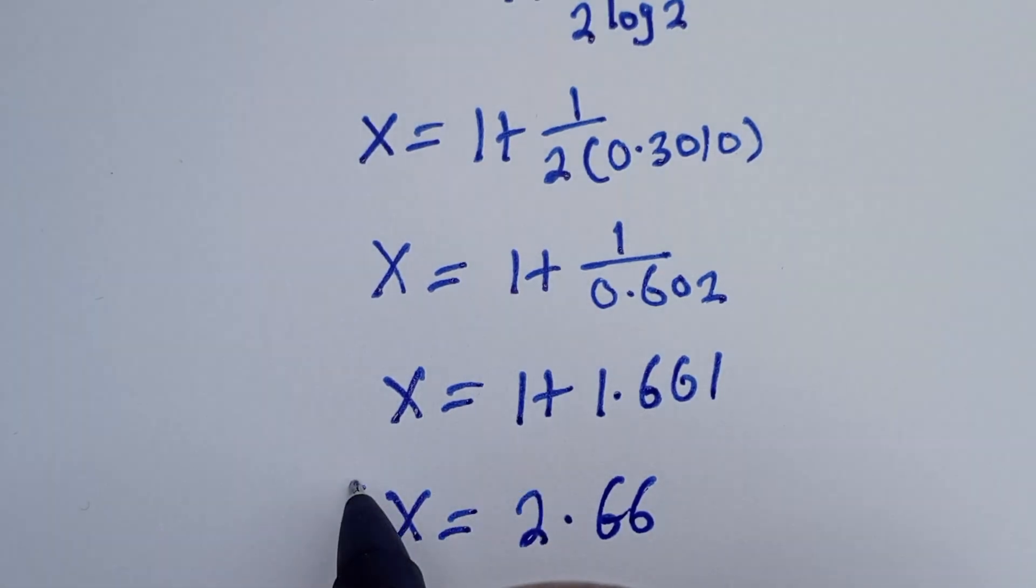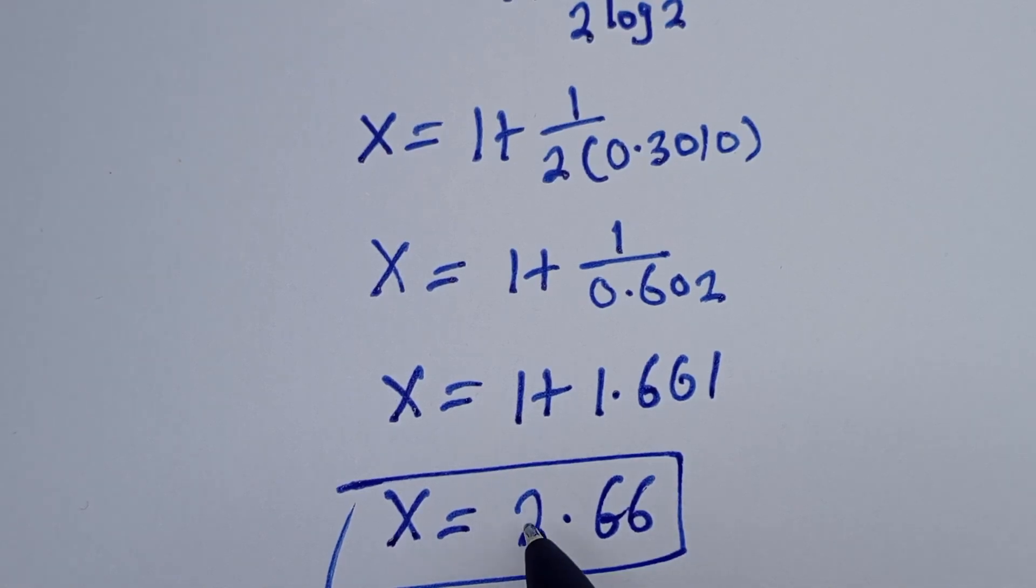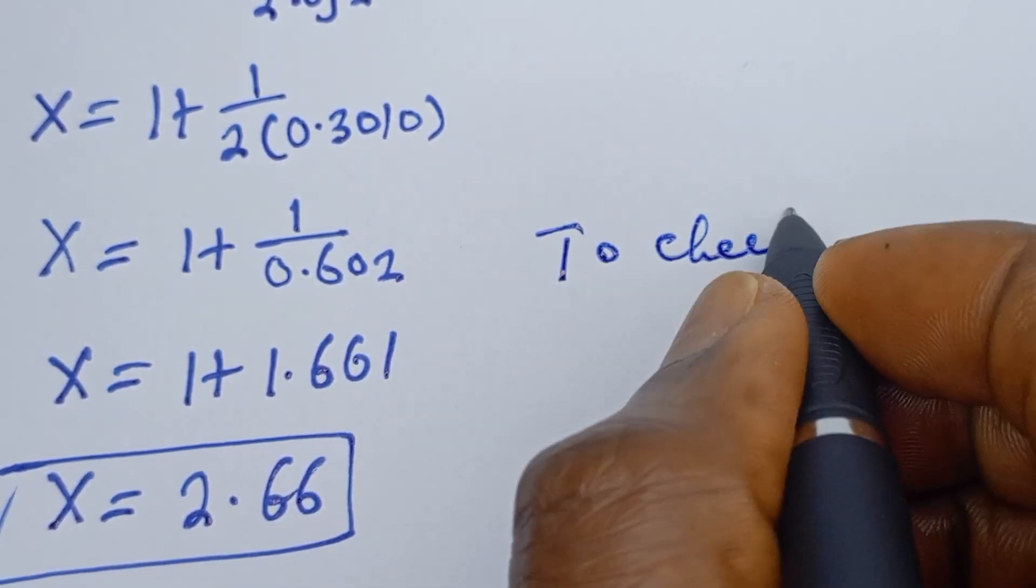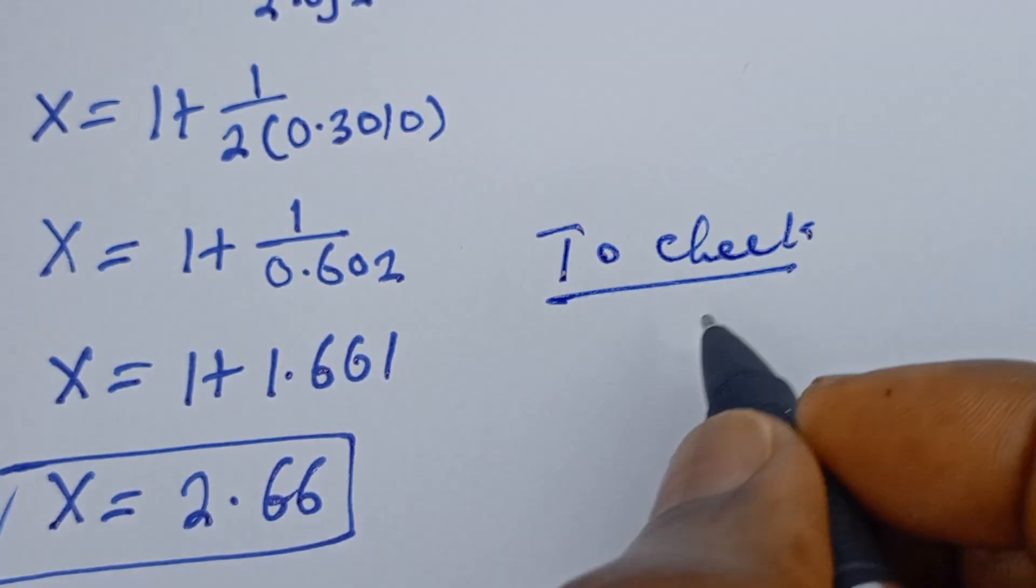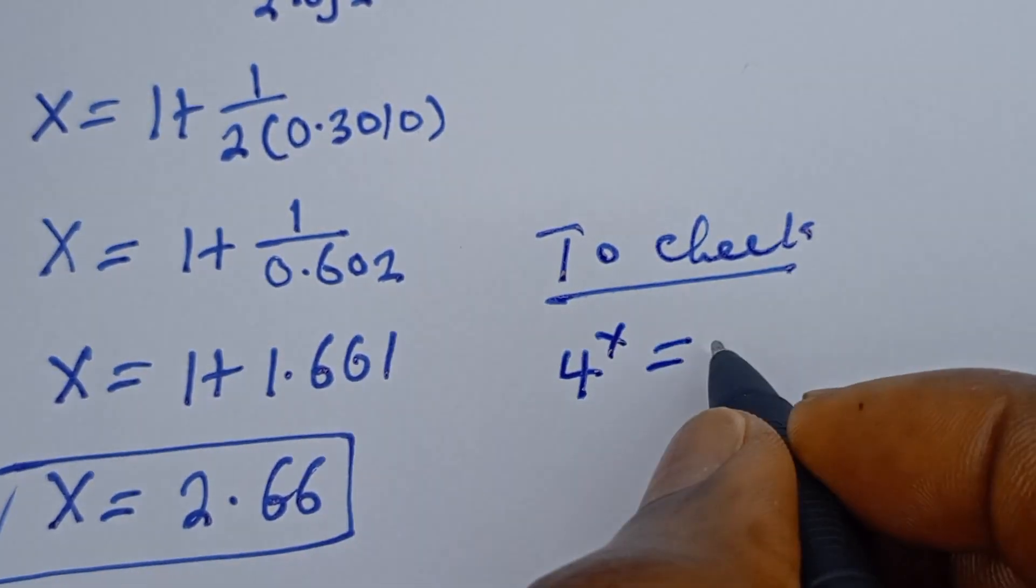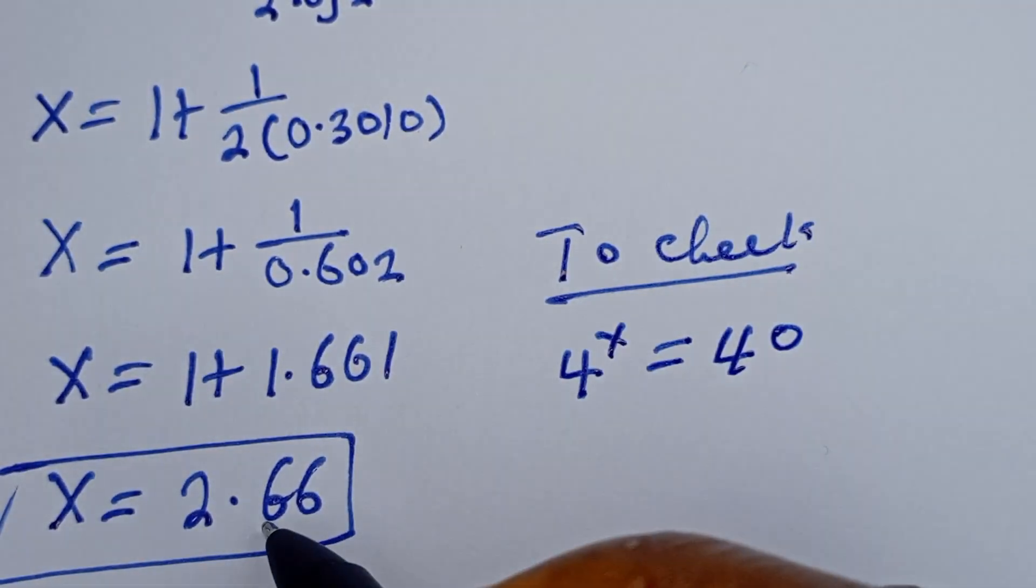And this is the final answer. We can check to confirm if this answer is right or wrong. Let's check. To check, we have the given equation 4 to the power of x is equal to 40. Now when x is equal to 2.66,